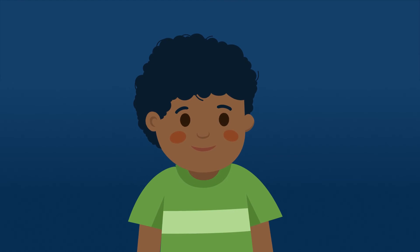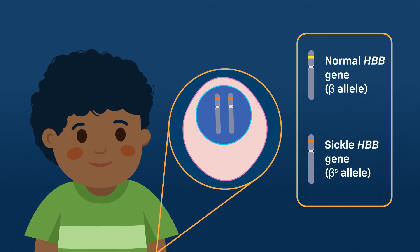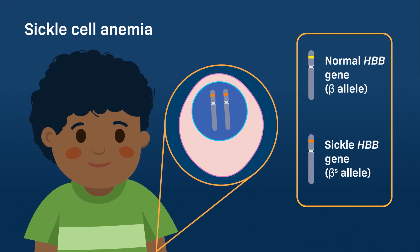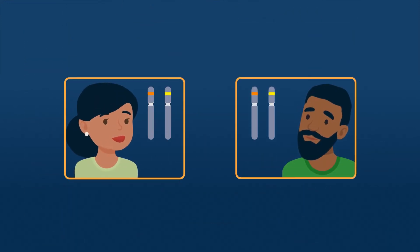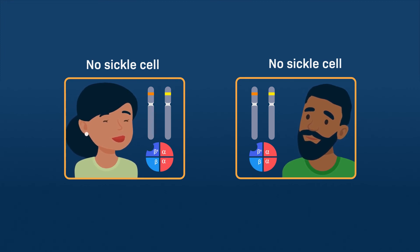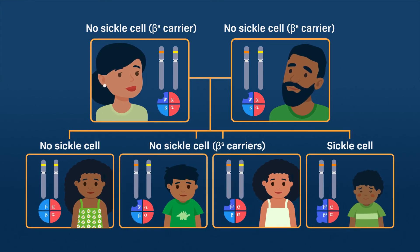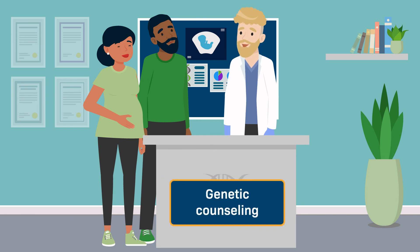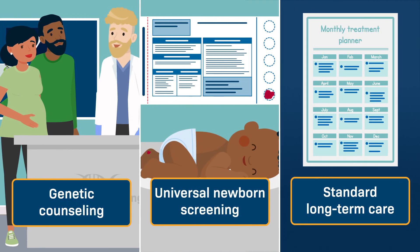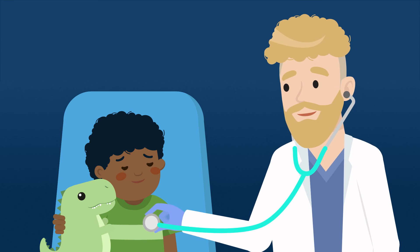Sickle cell anemia is considered a recessive genetic disorder, meaning a person needs to inherit both copies of the mutated beta-globin gene from their parents to develop sickle cell anemia. If only one copy is inherited, the individual will not develop sickle cell anemia. However, as they still carry a mutated beta-globin gene, they can pass it on to their children. Thus, genetic counseling and early diagnosis through universal newborn screening, in addition to standard long-term care, are crucial to improve survival for sickle cell anemia patients.